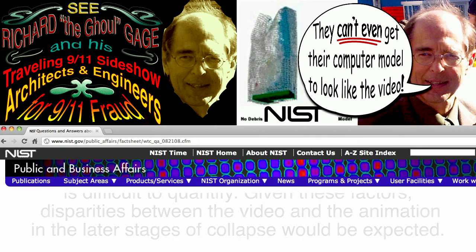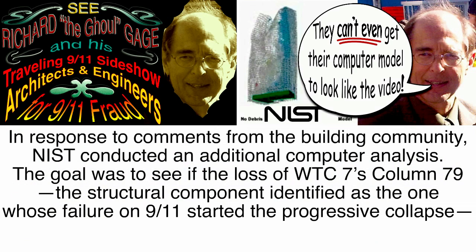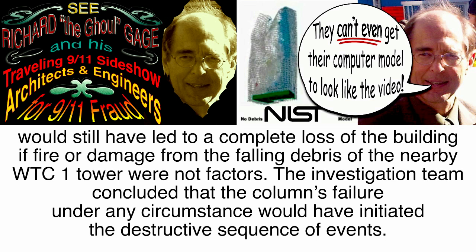So when you ask me how can I say that Richard Gage is a fraud — it's because it's unreasonable for him to be pushing these architects and engineers when they can't even get around to reading the frequently asked questions page on the NIST website, which explains the situation with the second model. It is ridiculous for Richard Gage to be continuing to point to the wrong computer model when this information has been on the NIST website for years. In response to comments from the building community, NIST conducted an additional computer analysis to see if the loss of Column 79 — the structural component identified as the one whose failure on 9-11 started the progressive collapse — would still have led to complete loss of the building if fire or debris damage were not factors. The investigation team concluded that the column's failure under any circumstance would have initiated the destructive sequence of events.